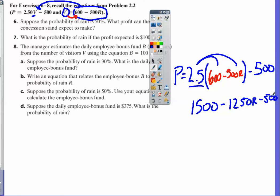1,500 and 500 are similar terms. So we learned that 1,000 minus 1,250R equals our profit.